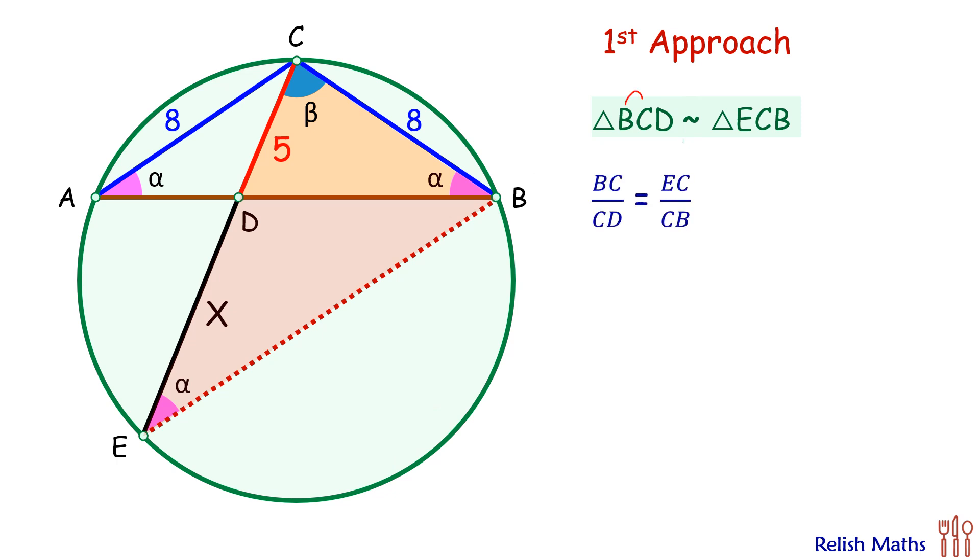So here we can say that BC upon CD will be equal to EC upon CB. Putting the values here we have got BC as 8 and CD is 5, and EC is X plus 5, and CB is again 8.